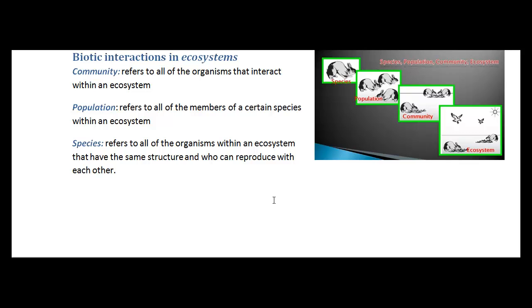Now, biotic interactions in ecosystems, organisms include community, population and species. So a community refers to all of the organisms that interact within an ecosystem. So if you look in this little diagram here, you see there's birds, there's a couple of rabbits, any organism within an area or within an ecosystem is part of the community of that ecosystem.